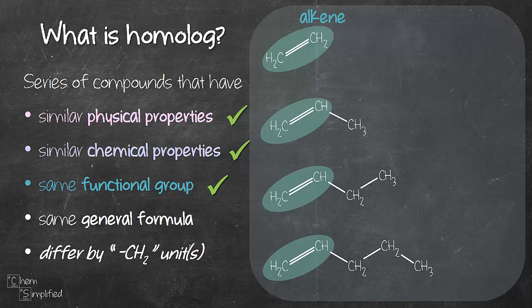And the next point is they have same general formula. So let's look at the chemical formula for each of these compounds. The first one is C2H4, so all you do is count the number of carbons and hydrogens. There are two carbons, four hydrogens for the first one. Work your way for every compound and you have C2H4, C3H6, C4H8, and C5H10. And if you were to generalize this formula, you will notice that you can come up with this formula which is CnH2n.